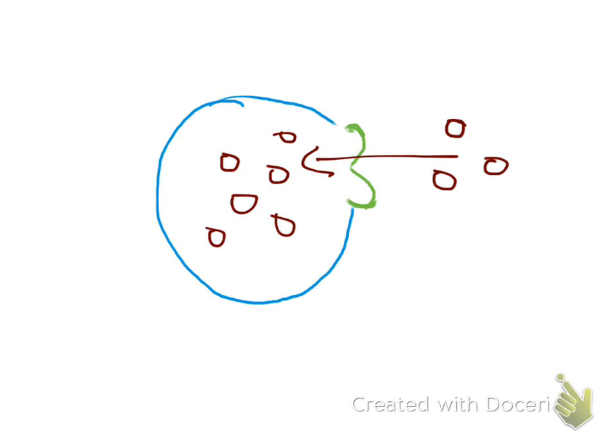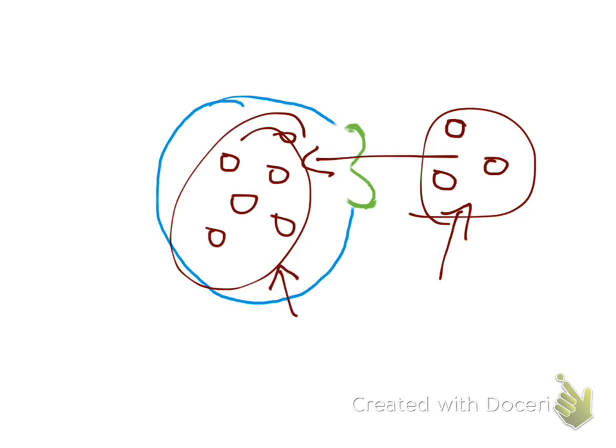So that's pretty much what active transport is. It's just moving large particles from area of low concentration to an area of high concentration. I'm not sure if I mentioned that before, but obviously you can see the amount of molecules outside of the cell was much smaller than what was inside.